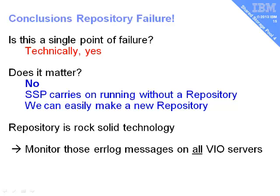So let's sum up. Is the repository a single point of failure? Well, technically yes, there is only one. But the real question is, does it matter? And the answer is no. The Shared Storage Pool will carry on running without a repository disk, and it will be telling you that it hasn't got one. We can easily make a new repository disk and recover from the situation. So the repository is rock solid technology. In actual fact, when I was asked how many copies we should have, I said 16 — let's have lots. That actually introduces more problems than it solves.